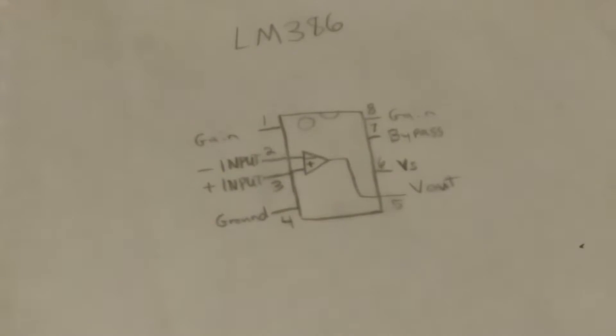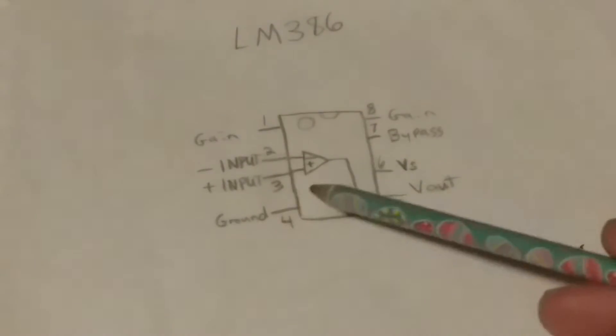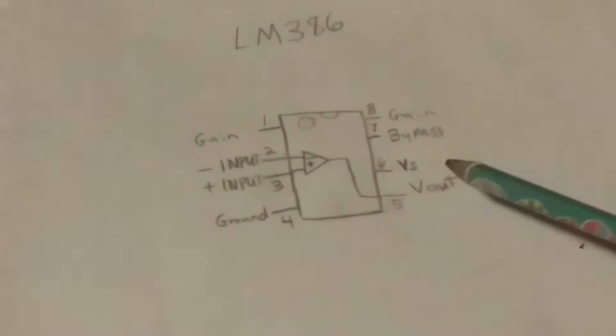First let's take a look at the pinout for the LM386 op amp. On the left we have pins 1 through 4 starting at the top and going down: 1, 2, 3, 4. On the right we have pins 5 through 8 starting at the bottom and going up: 5, 6, 7, 8.